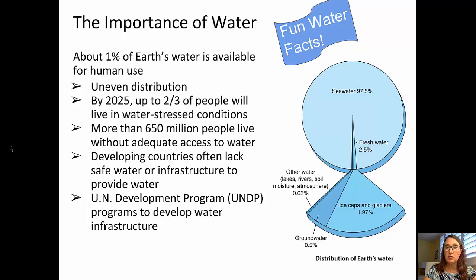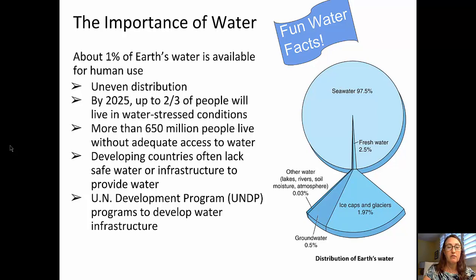Of that water available for human use, it's distributed unevenly across the globe. By 2025, up to two-thirds of the world's population will live in water-stressed conditions. There will be wars — or there are already wars — over freshwater resources. More than 650 million people currently live without adequate access to water, and developing countries often lack safe water or the infrastructure to provide it. The United Nations Development Program offers programs to develop water infrastructure.